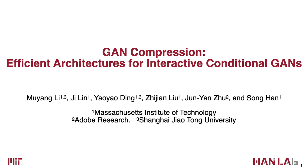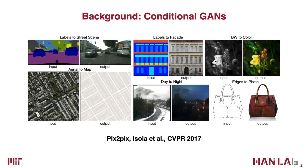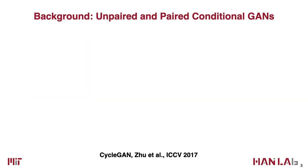GAN models excel at synthesizing photorealistic results. Its conditional form, Conditional GANs, further enables controllable image synthesis, allowing a user to synthesize images given various conditional inputs, such as user sketch and class labels. There are two types of Conditional GANs: the paired and the unpaired one.